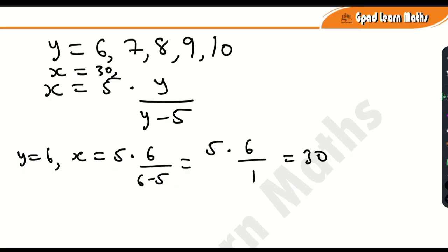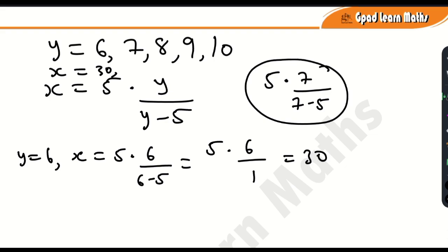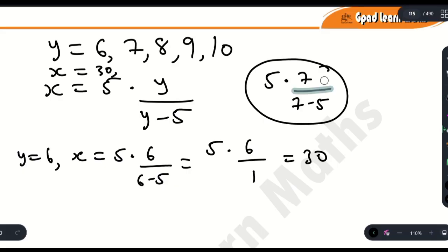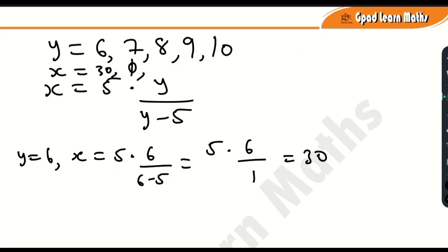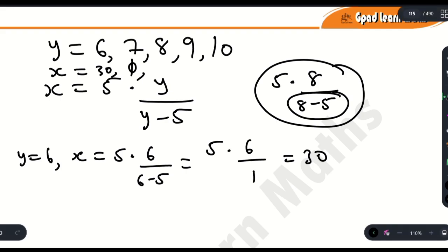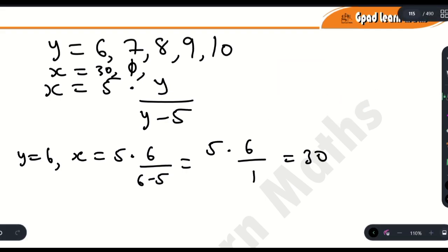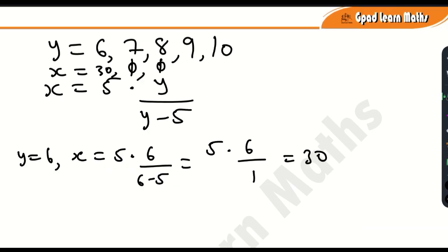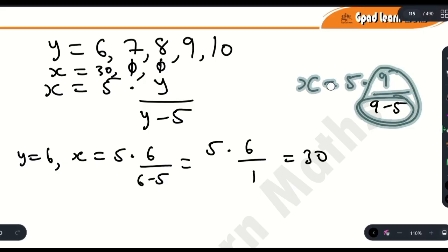When y = 7: x = 5 × 7 / (7 − 5) = 35/2, which is a fraction — not a whole number. Since x and y must be positive integer solutions, x does not exist when y = 7. Similarly, when y = 8: 8 − 5 = 3, giving a fraction, so x does not exist. When y = 9: 9 − 5 = 4, and 9/4 is also a fraction, so x does not exist when y = 9.